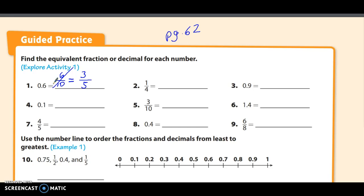1 fourth of a dollar is 25 cents, so that means that 1 fourth is equal to 0.25. 9 tenths, it doesn't simplify, so if you can say 9 tenths, you can write 9 tenths. Number 4 is 1 tenths. Number 5 is 3 tenths.